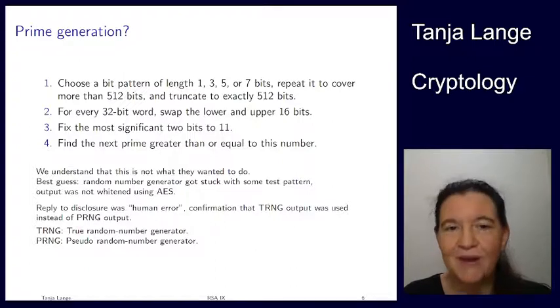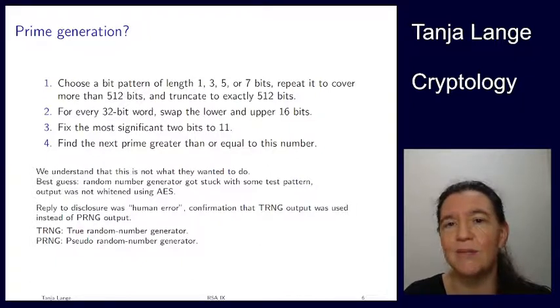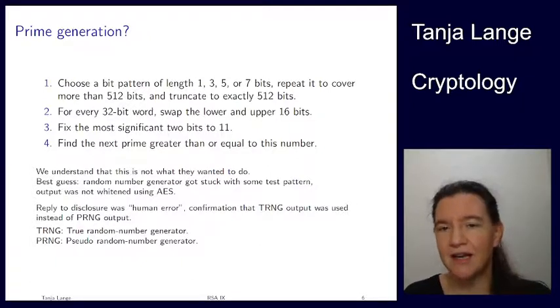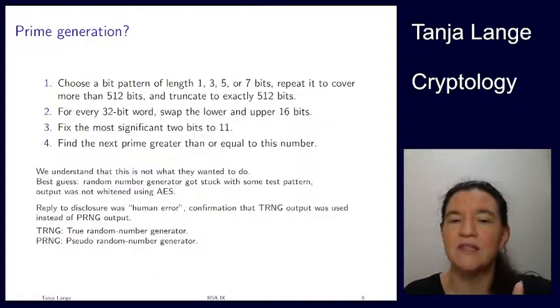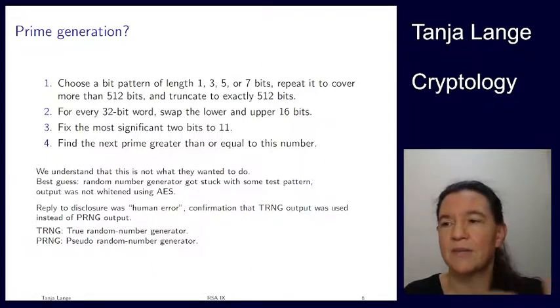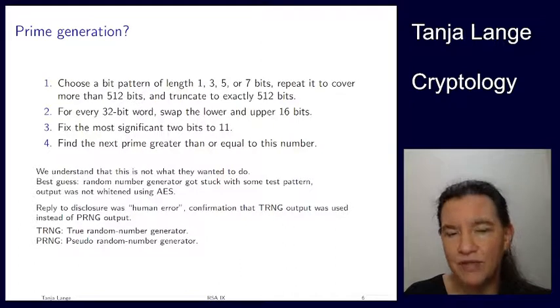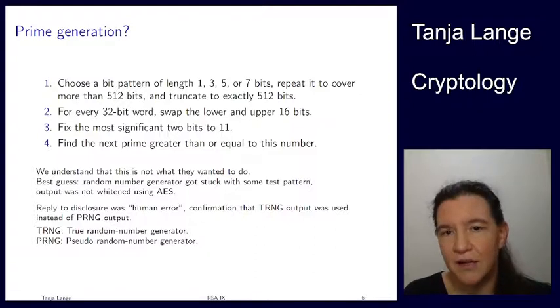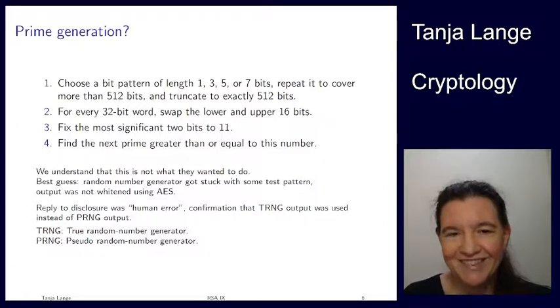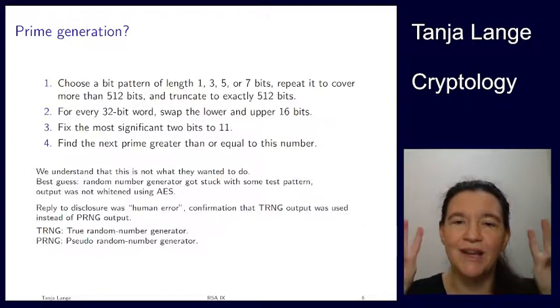Also, there's a lot of fine print here where I understand that this is not what I meant to do. What apparently happened is that they were using a random number generator, which got stuck, which never actually woke up. It was in some test pattern or in some self-test pattern, which would be these length one, three, five or seven. And they were already asking for real randomness when it was still in these self-tests.